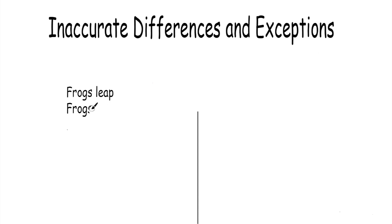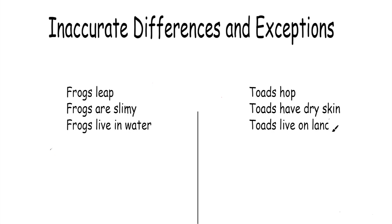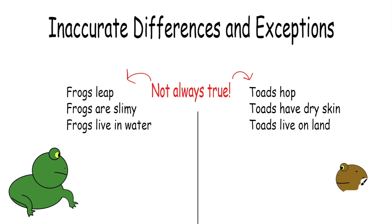Frogs jump and toads hop, frogs are smooth and slimy while toads are dry and bumpy, frogs live in water and toads live on land, but there are many exceptions to each one of these inaccurate distinctions.